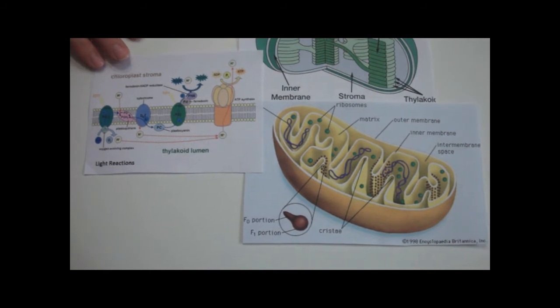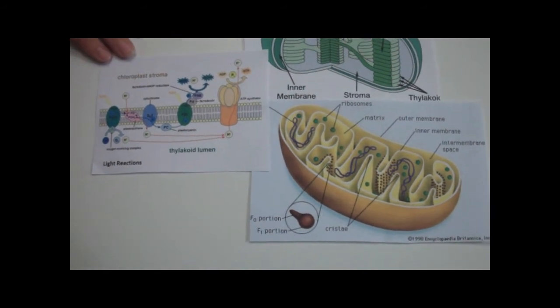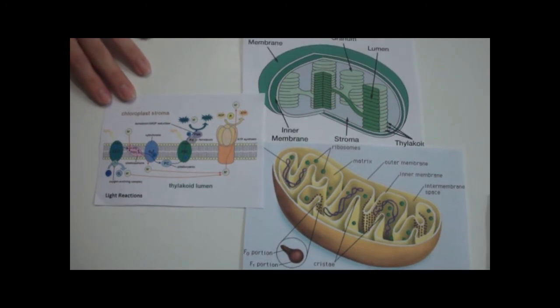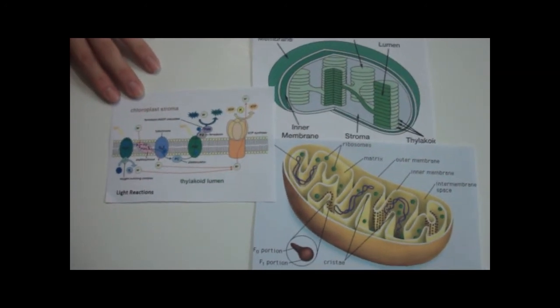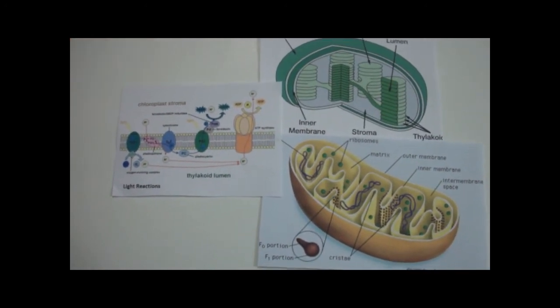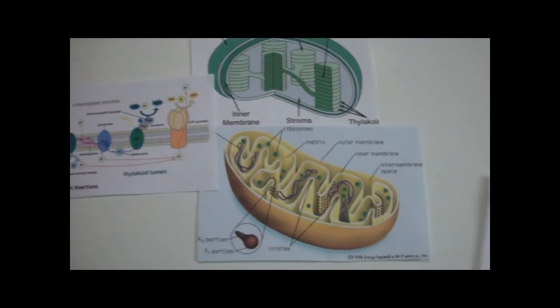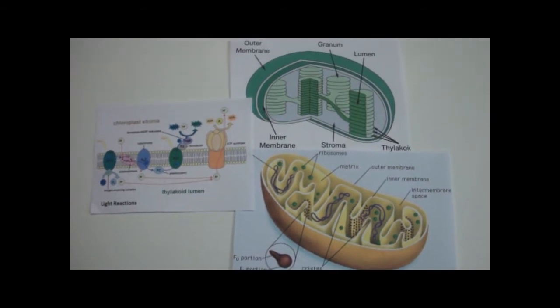There are key differences, however. For one, mitochondria gain electrons from the oxidation of organic molecules, while chloroplasts get theirs from oxygen. Also, mitochondria gain energy from a food source, while chloroplasts use direct energy from the sun.